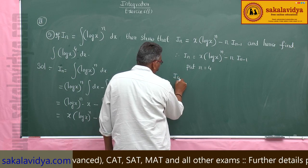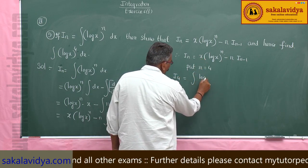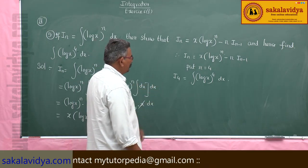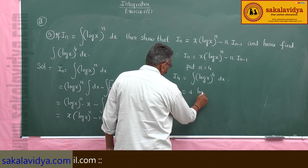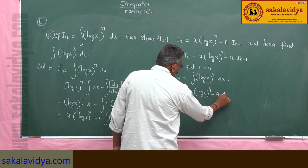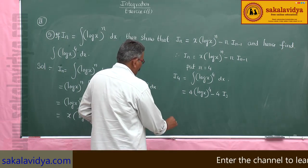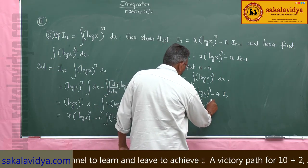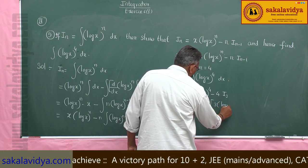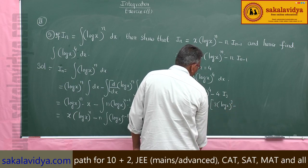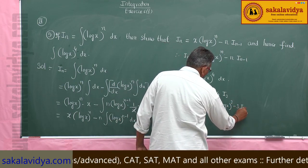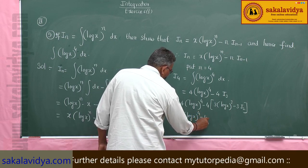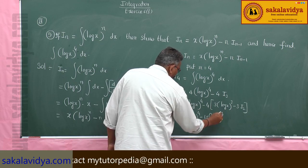I(4) equals the integral of log x to the power of 4 dx. Using the reduction formula: x log x to the power of 4 minus 4 times I(3). Now find I(3): x log x to the power of 3 minus 3 times I(2). Substituting: I(4) equals x log x to the power of 4 minus 4 times x log x to the power of 3 minus 3 times I(2), which gives x log x to the power of 4 minus 4 times x log x to the power of 3, plus 12 times I(2).